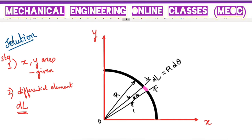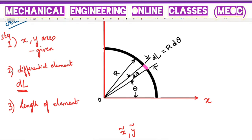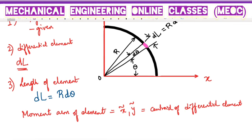Let us also assume that the angle from the X axis to the element is some angle θ. Now the third step is to find the length and moment arm. Length means DL — we have to find DL and also the moment arm. Moment arms are the centroidal locations X̃ and Ỹ of the differential element.